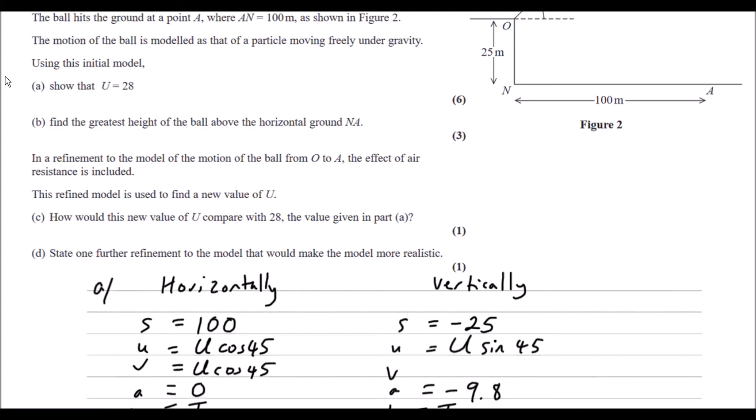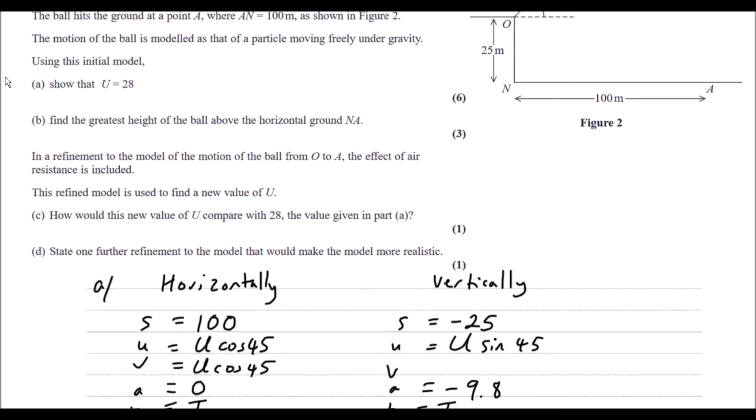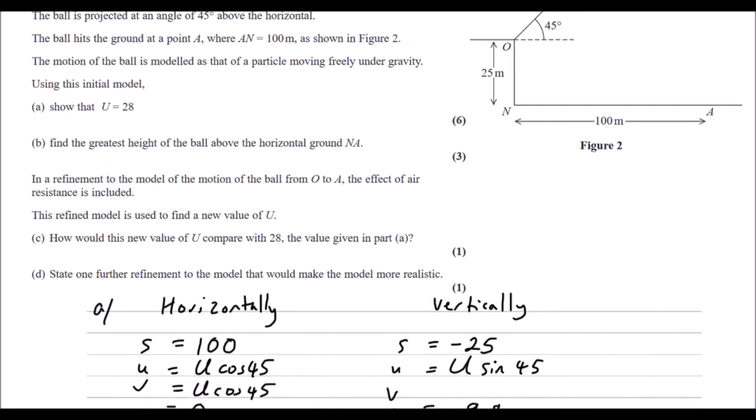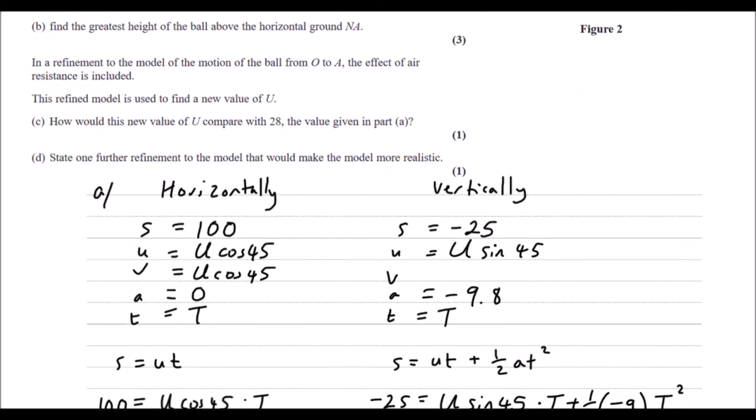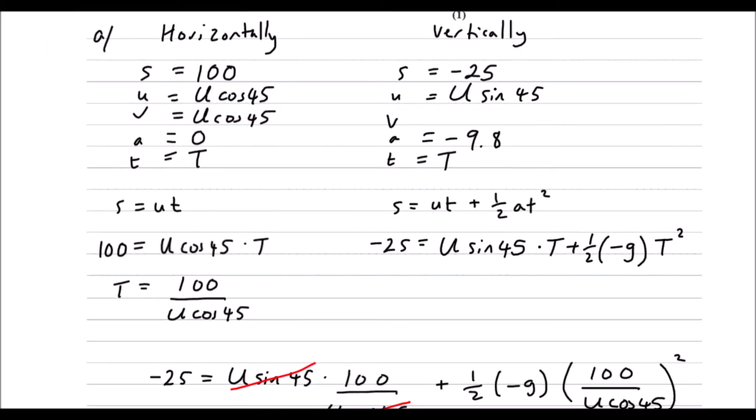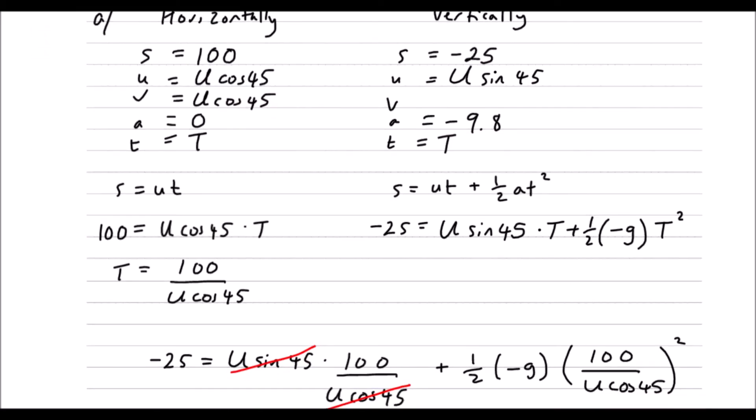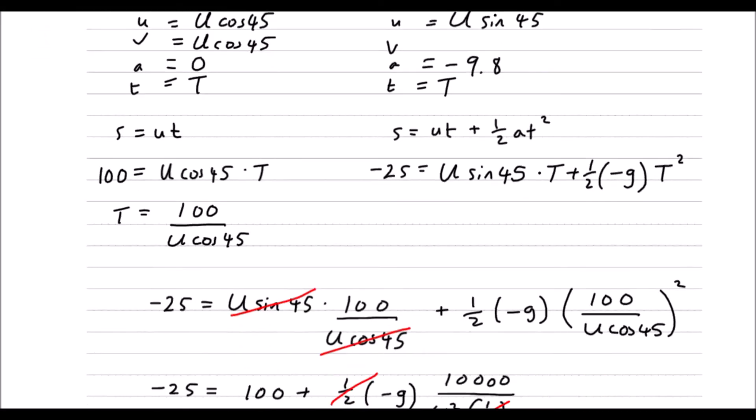Part B, find the greatest height of the ball above the horizontal ground N A. So the greatest height of the ball is when the vertical velocity is equal to zero. When it reaches the top, it hasn't got a positive or a negative velocity. It's got a velocity of zero.